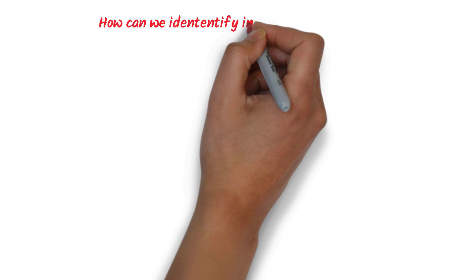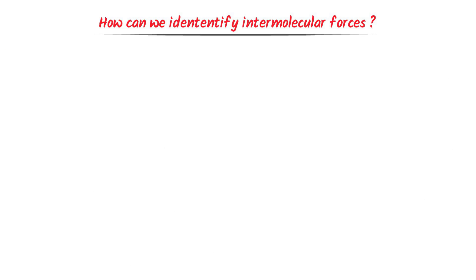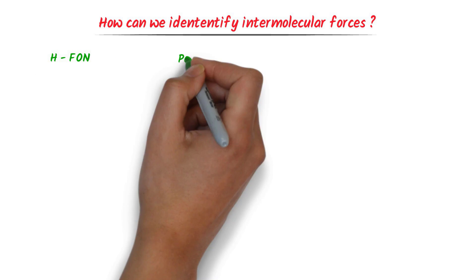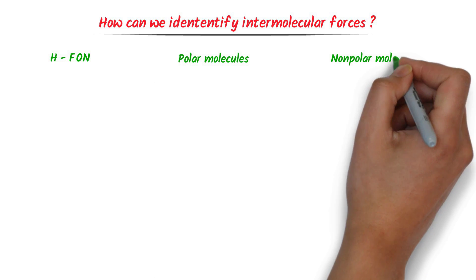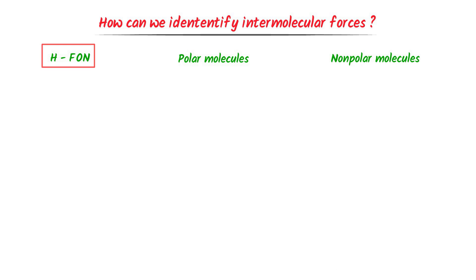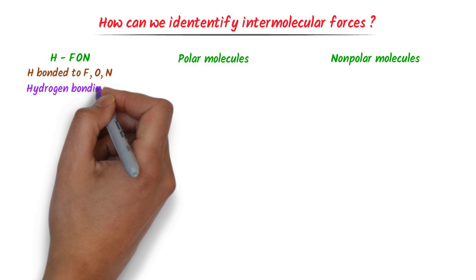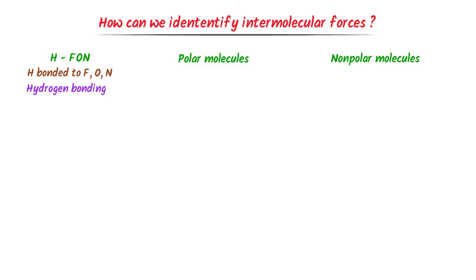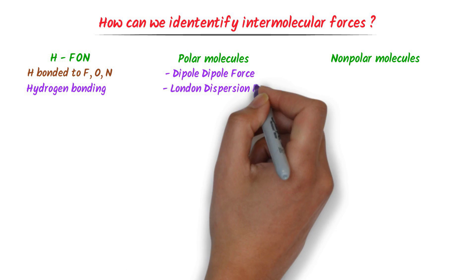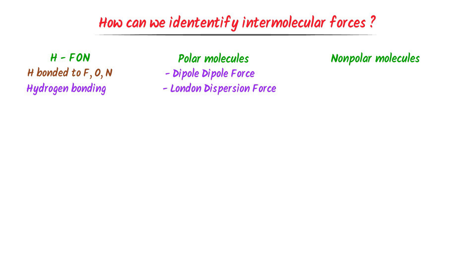Now let me teach you how we can identify intermolecular forces in any molecule. The easy trick is: H-FON, polar molecules, and non-polar molecules. H-FON means that if hydrogen forms a chemical bond with fluorine, with oxygen, and with nitrogen, they contain hydrogen bonding. Secondly, if a molecule is a polar molecule, it contains dipole-dipole force and London dispersion force. Thirdly, if a molecule is a non-polar molecule, it contains London dispersion force.